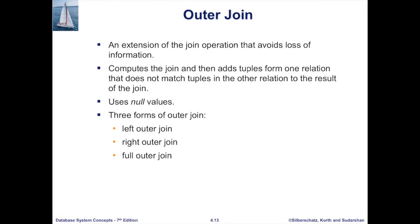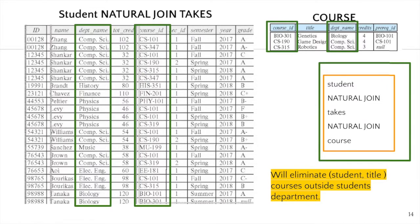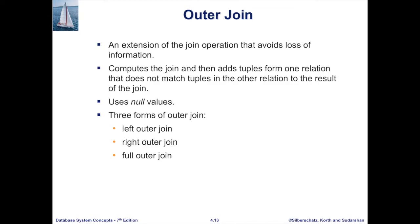The next type of join is the outer join, which is an extension of the join operation that avoids loss of information. In a regular join, we only keep records common to both relations. In an outer join, we preserve records that do not appear in the other table, using null values to fill in missing attributes. There are three types of outer join: left outer join, right outer join, and full outer join.